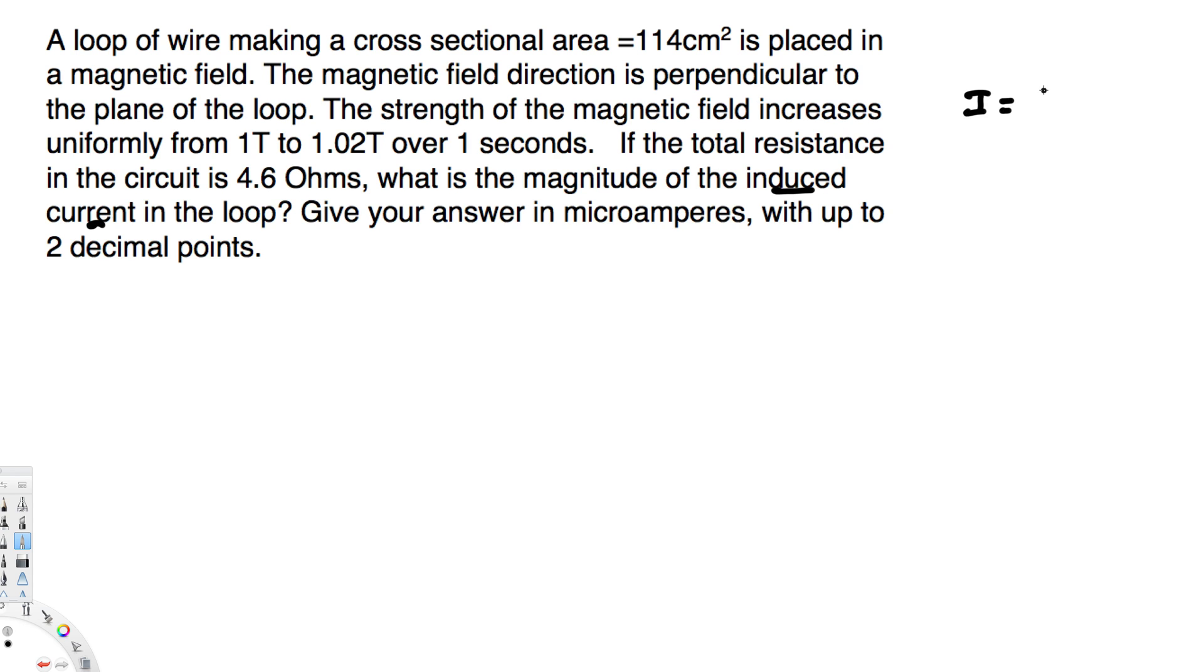To find the induced current we have to use this formula: I is equal to EMF divided by the resistance. We have the resistance provided, we have to find out the EMF. To find out the EMF we are going to use Faraday's equation.